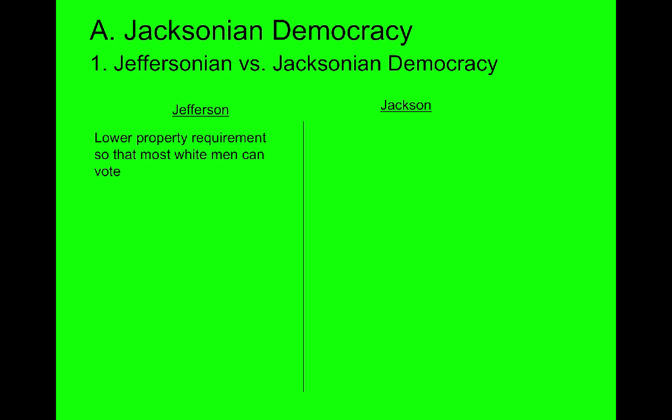By the time we get to the 1820s, President Jackson and others in his party believed we shouldn't have any property requirements at all. We should allow all white men to have the power to vote. Jacksonian democracy is about increasing democracy — at least as far as white men go — to encompass everyone. Jeffersonian democracy still believed that rich, educated, elite men should be elected to office. Jefferson believed almost all white men should vote, but once they vote, they should vote for their betters.